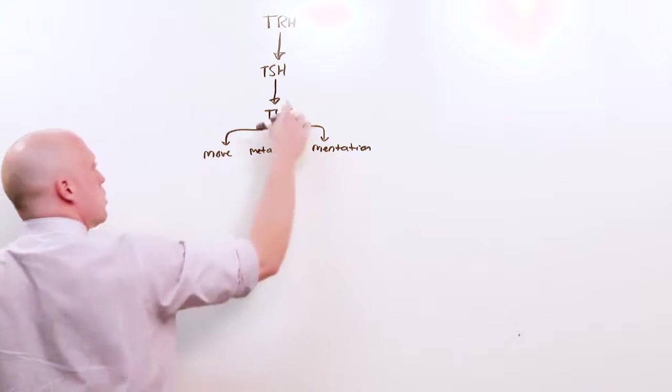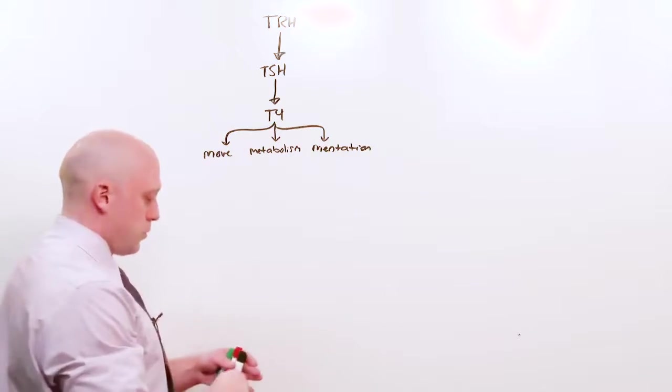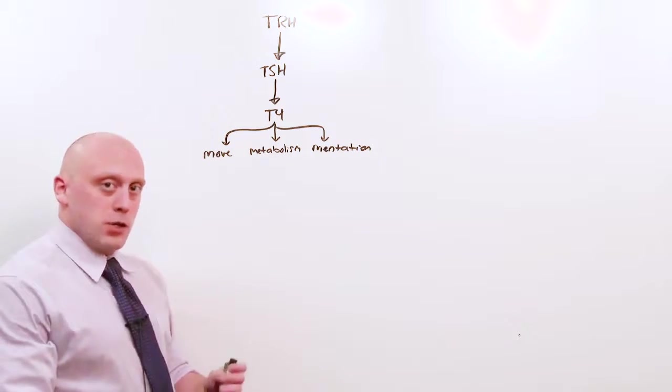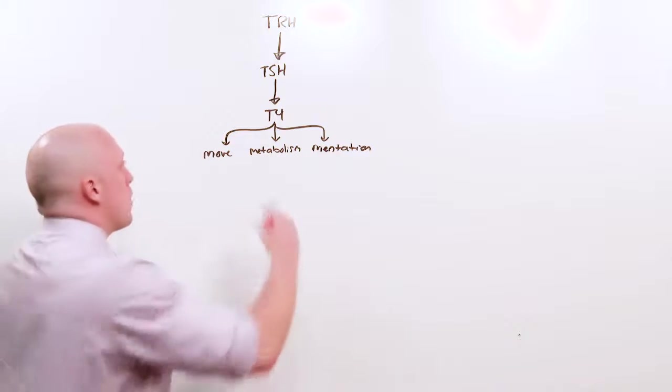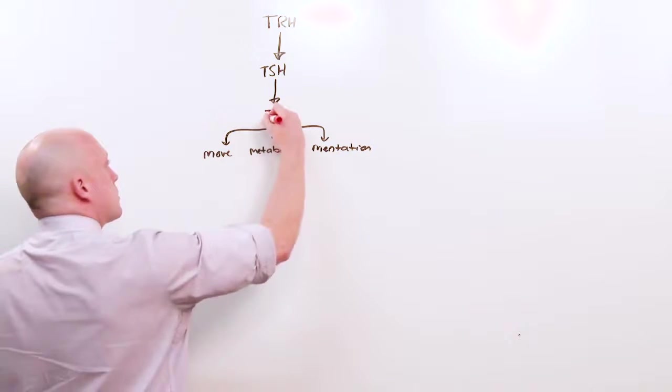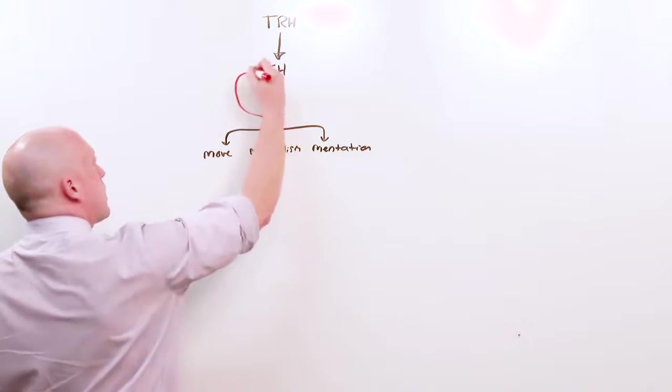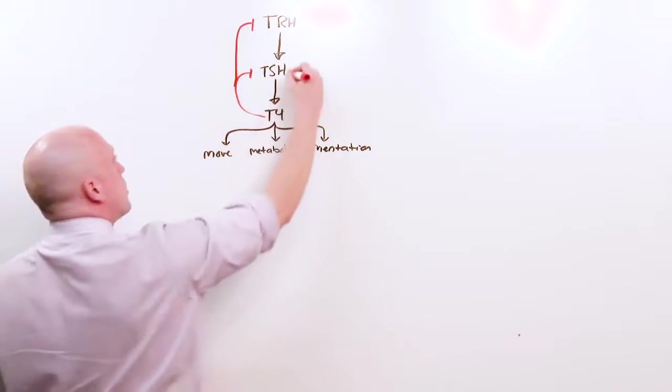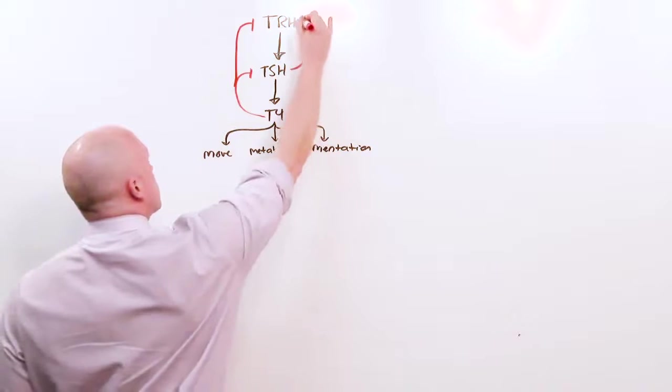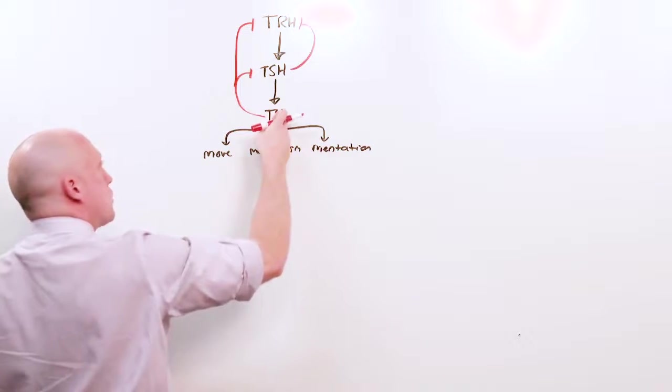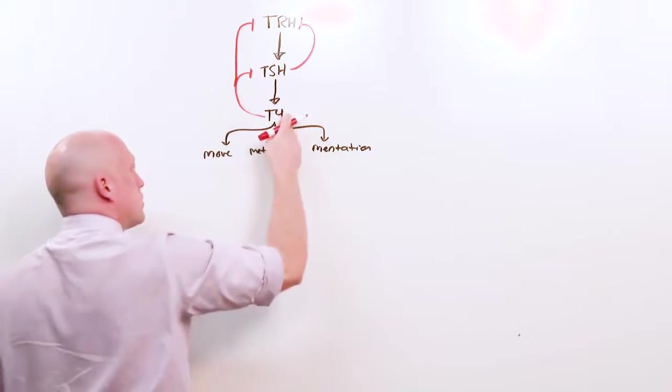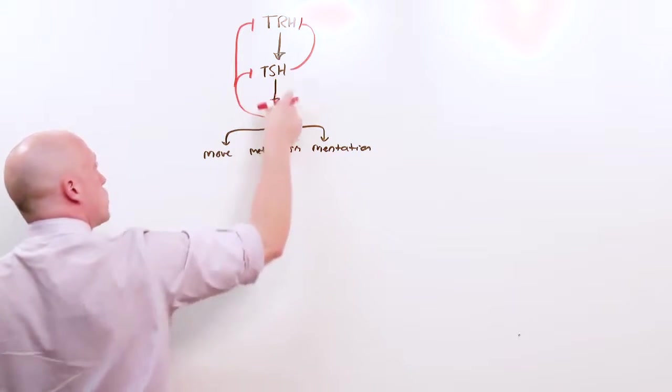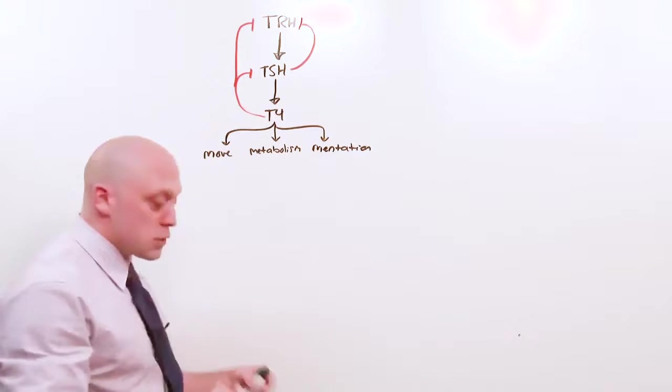Movement, metabolism, and mentation are driven by T4. Without T4, you basically can't live. As we discussed in the anterior pituitary lecture, there's a feedback mechanism where excess T4 will feedback on TSH to turn it off, as it will on TRH. Too much T4 inhibits TSH. Too little T4 disinhibits TSH. This becomes really important.